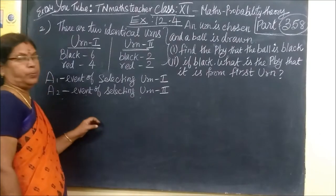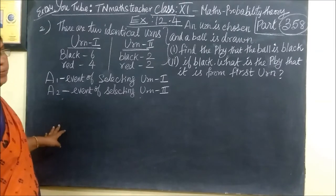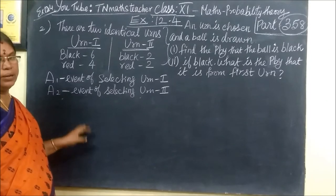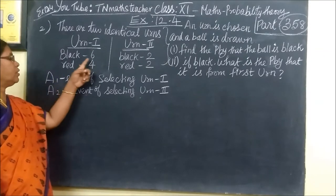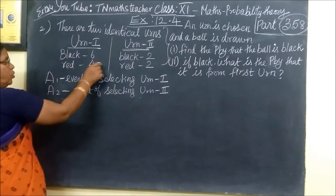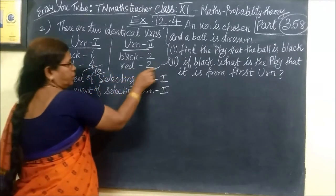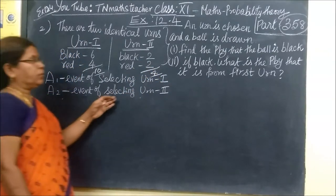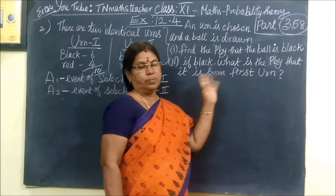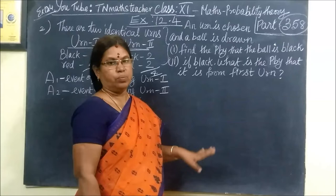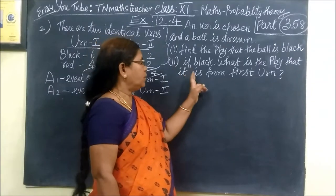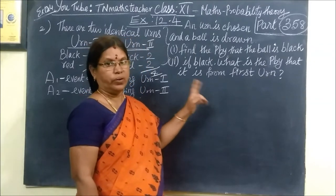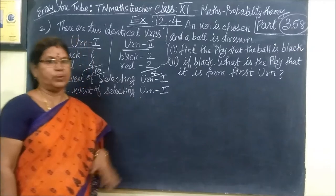Next we see Question No. 2. Exercise 12.4. We are given that there are two identical urns. Urn 1 has 6 black balls and 4 red balls, so total 10 balls. Urn 2 has 2 black balls, total 4 balls. We are finding the probability that the ball drawn is black, and the condition that it is taken from Urn 1.